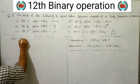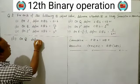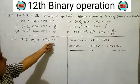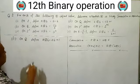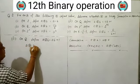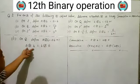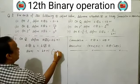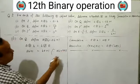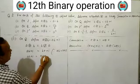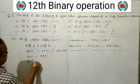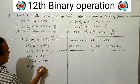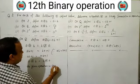Second part: on Q (rational numbers), the operation is defined as a★b = AB + 1. Checking commutative: A★B = AB+1 and B★A = BA+1. Since AB = BA (product is commutative), AB+1 = BA+1. Therefore A★B = B★A.